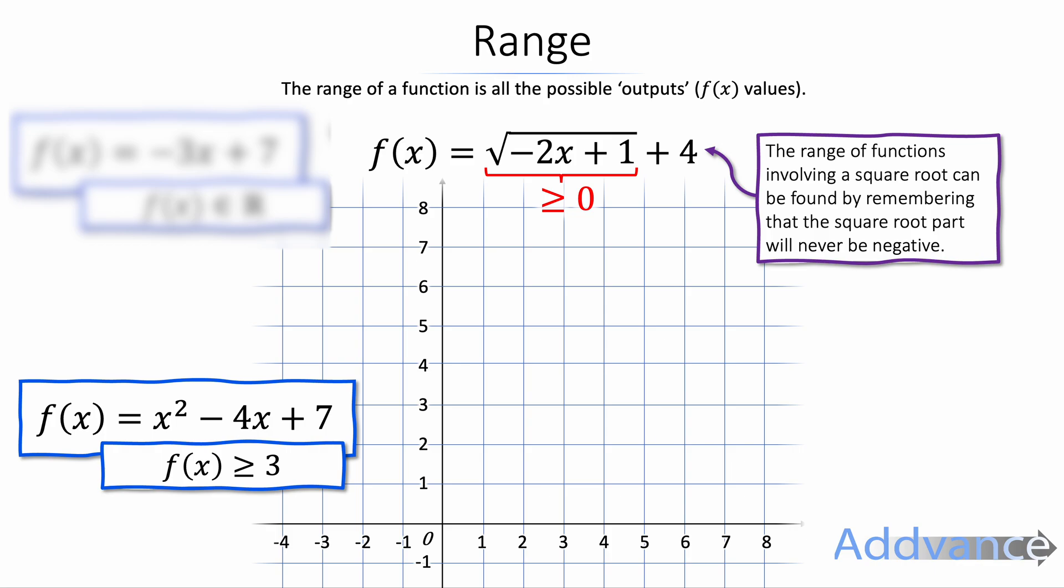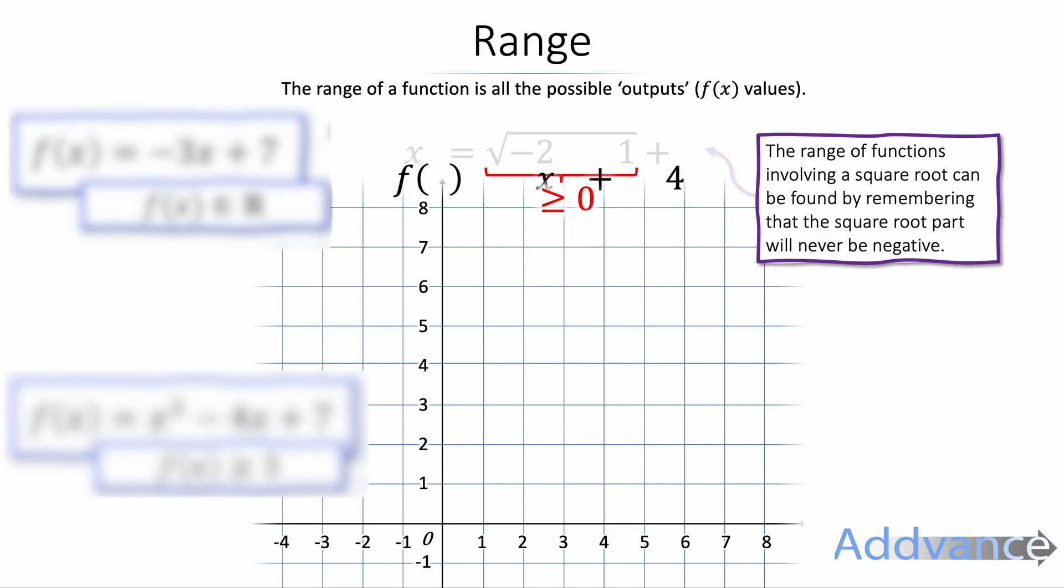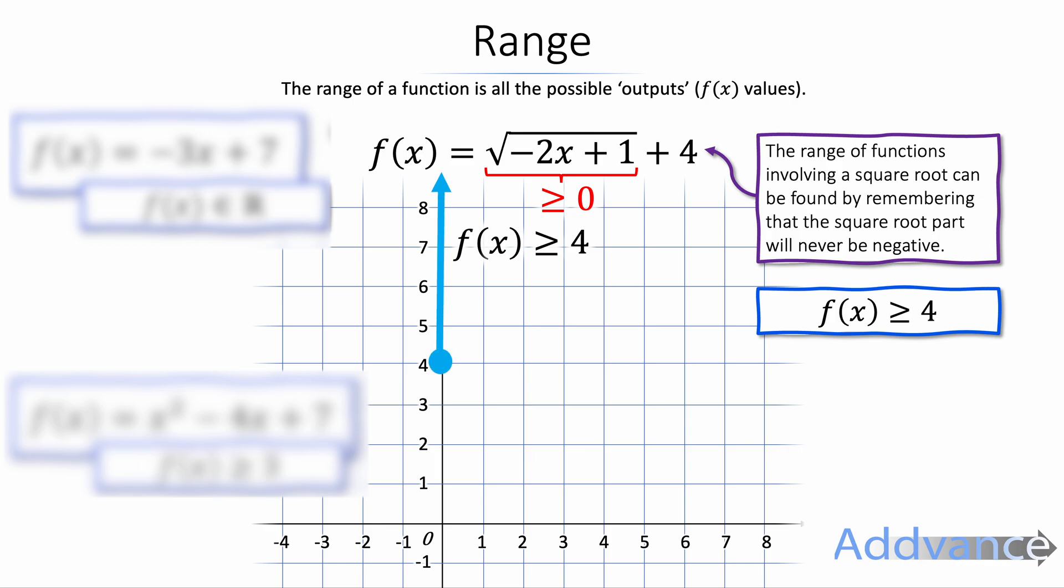I've shown that here by showing that the red part must always be positive. So here f of x is more than or equal to 0 plus 4. f of x is more than or equal to 4. So therefore the range of this function is more than 4. And that red line is me showing what the curve looks like.